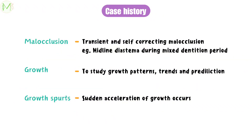The orthodontic reasons for asking the age of the patient are as follows. Some malocclusions which occur during the growth period can be transient and self-correcting, like midline diastema during the mixed dentition period, also known as the ugly duckling stage. Age also helps to study growth patterns, growth trends, growth predilection, and differential growth of an individual.